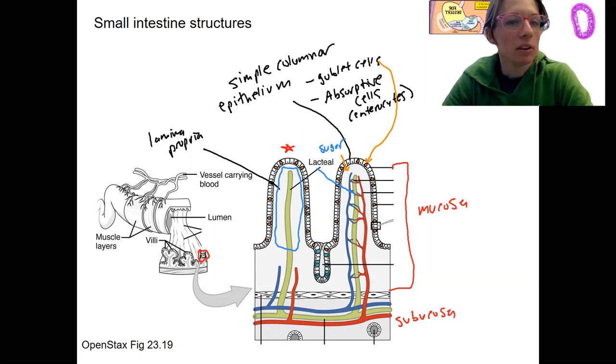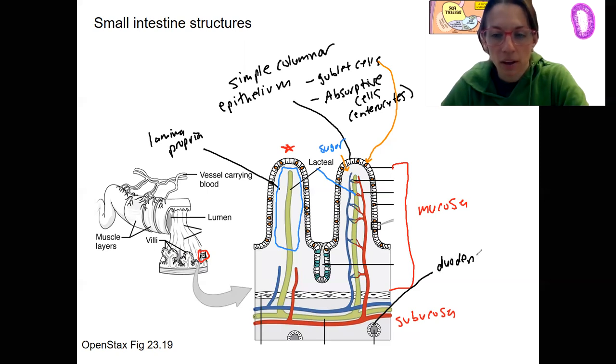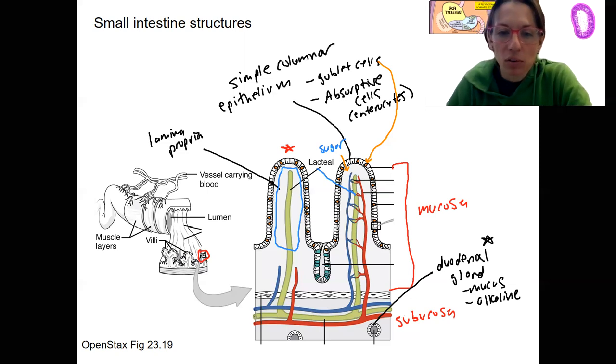Okay. Two more things, I believe, on this picture. One is, both are types of glands. One is our duodenal gland, duodenum, duodenal. That's specific to the duodenum. Duodenal gland. These are mucus producing. They're going to produce an alkaline substance that helps to neutralize the stomach acid coming in. So these are only in the duodenum. They're in the submucosa, right? You can see that.